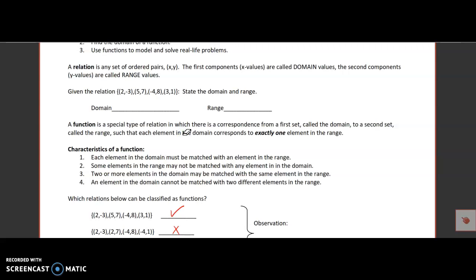A relation is any set of ordered pairs. The first component x is called the domain, the second component y is called the range. The domain being the x values, we are looking at 2, 5, negative 4, and 3. The range being the set of y values, we're looking at negative 3, 7, 8, and 1. So there's our domain and our range.